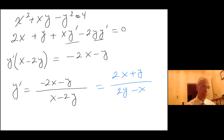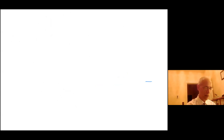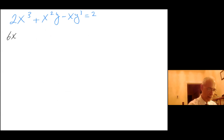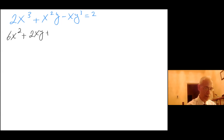Let's try another one. How about 2x cubed plus x squared y minus xy cubed equals 2. Using the product rule: the derivative of x squared is 2x times y, plus the derivative of y which is y prime times x squared.